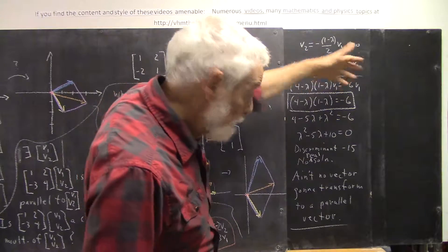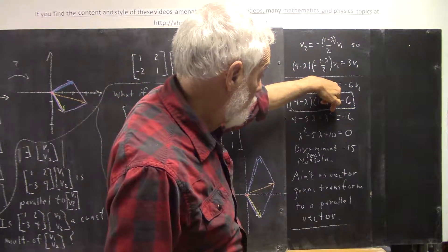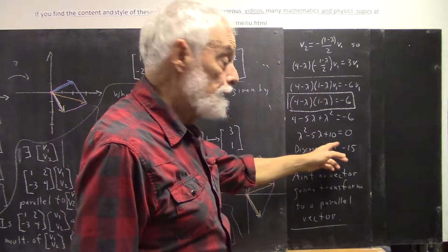However, we're not going to get a solution. We multiply this out, we get this. We add 6 to both sides, we get this. Now, how do we solve this equation?